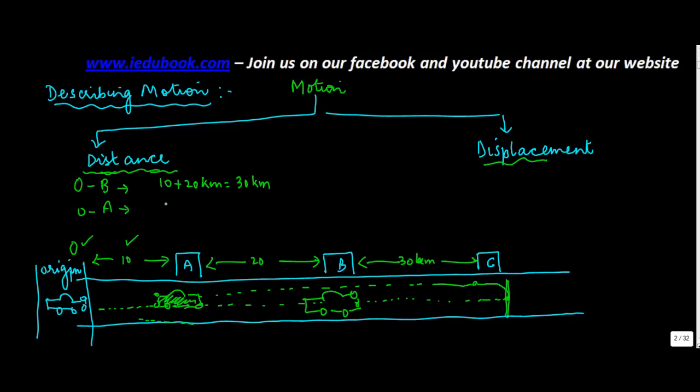The distance covered will be O to A plus A to B plus B to C. Now as it came back, it covered another 30 km, then it covered another 20 km. So in all it covered 110 km. So if I were to ask you what is the distance covered, the distance is basically the total travel.